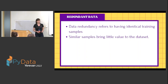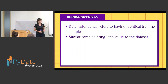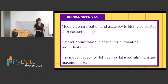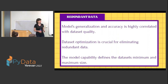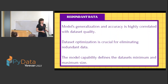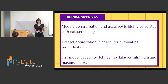Overfitting can refer to data redundancy. Data redundancy means having identical images that bring little value to our dataset. Having a lot of similar or identical cases leads to bad generalization of our AI model, which is highly correlated with dataset quality. It is therefore important to reduce and optimize the dataset — to eliminate redundancies.